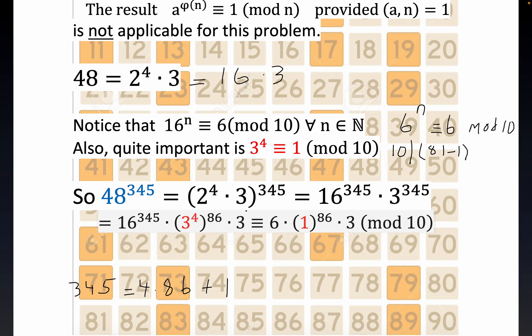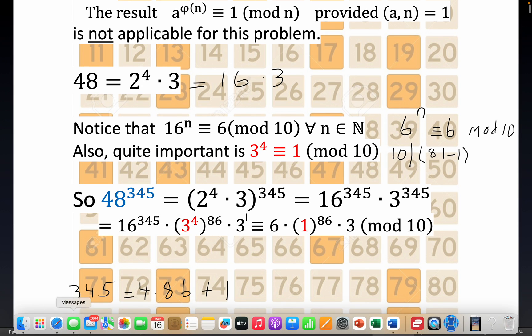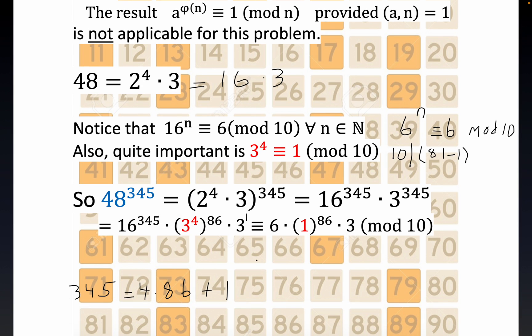You can put a 1 right there. So 48^345 = (2^4 × 3)^345 = 16^345 × 3^345 = 16^345 × (3^4)^86 × 3. We know that 16 raised to any natural number is congruent to 6, so we can literally replace this big uncalculable object with just 6 in modular arithmetic. Also, 3 to the 4th is 1 modulo 10, so we have 1 to the 86th.